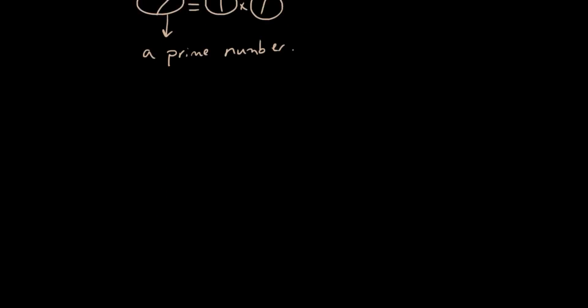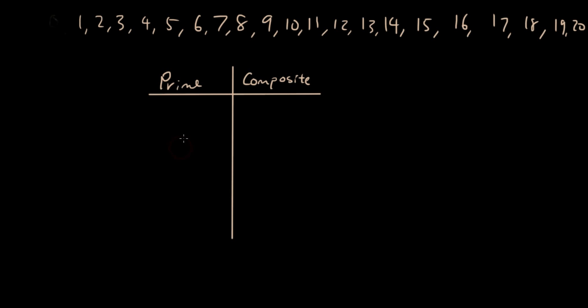Okay, so the goal of this video is, I'm going to give you a list of numbers. And you tell me whether they're prime or composite. So here are all the numbers between 1 and 20.